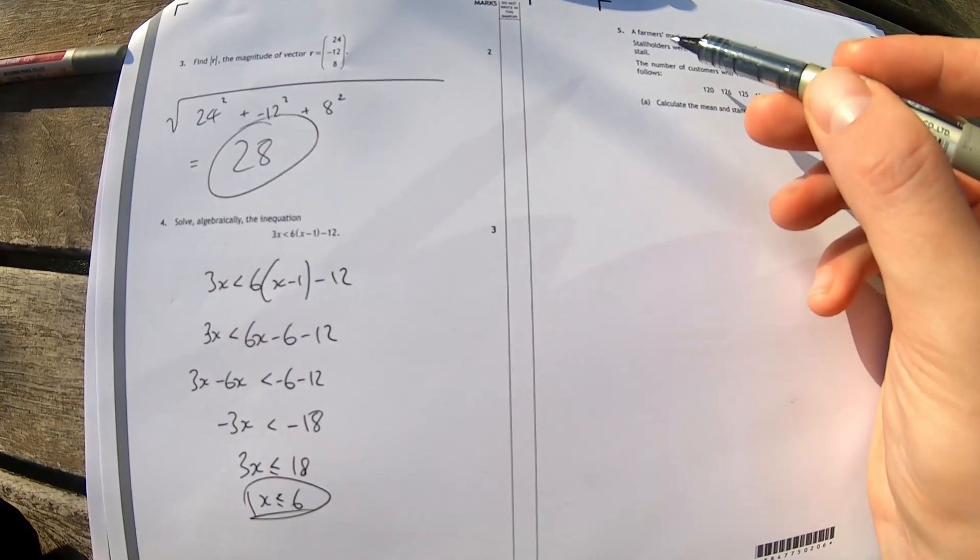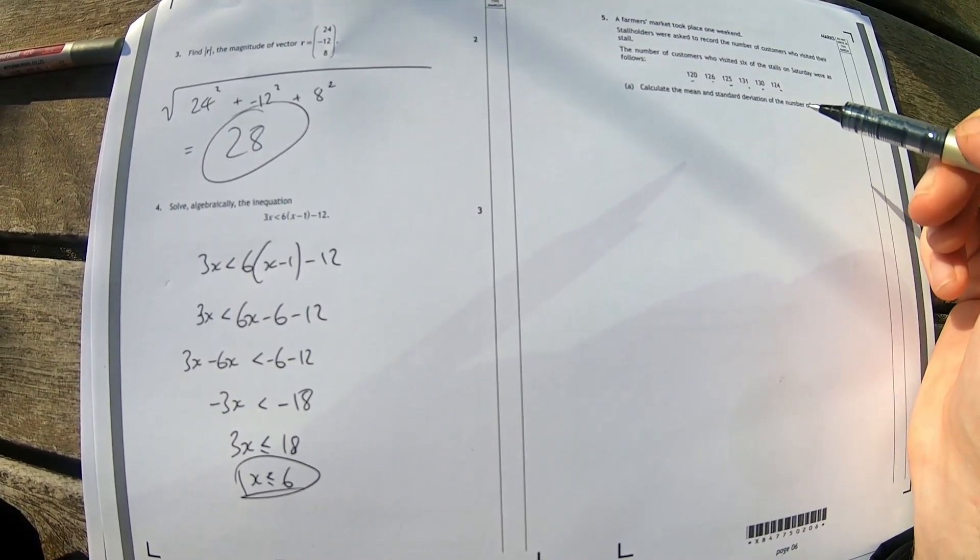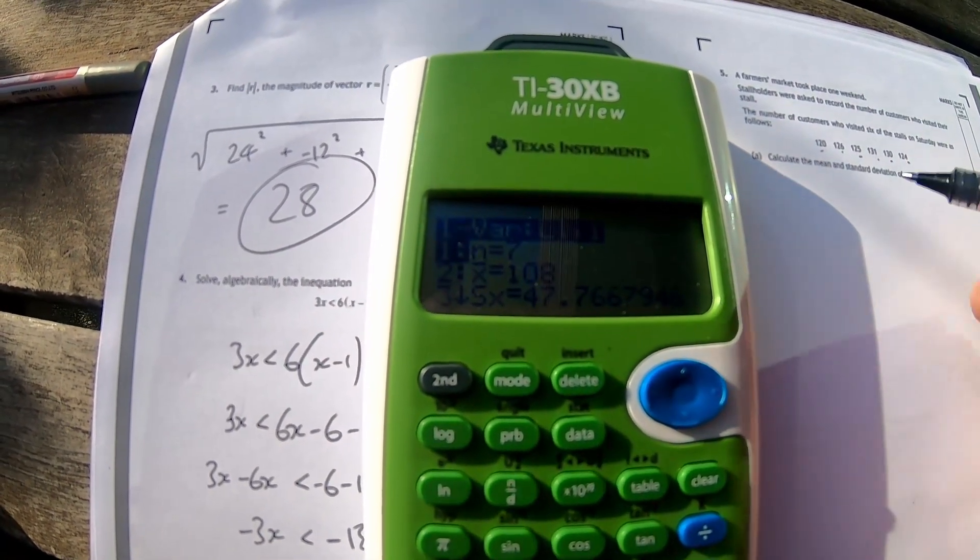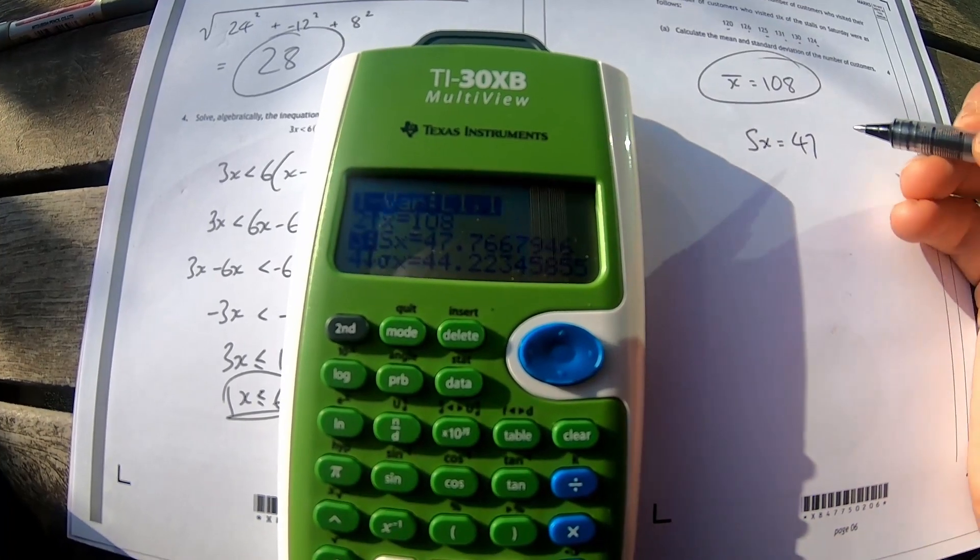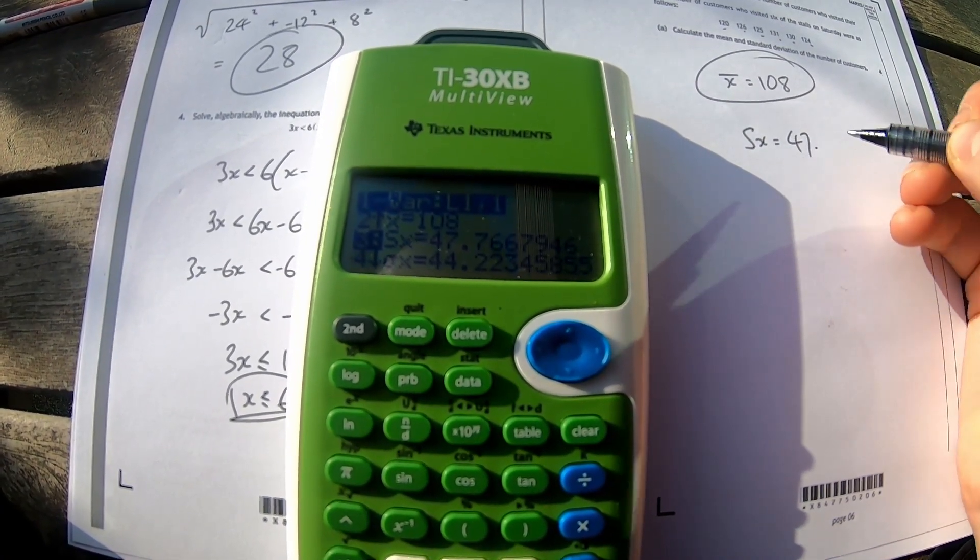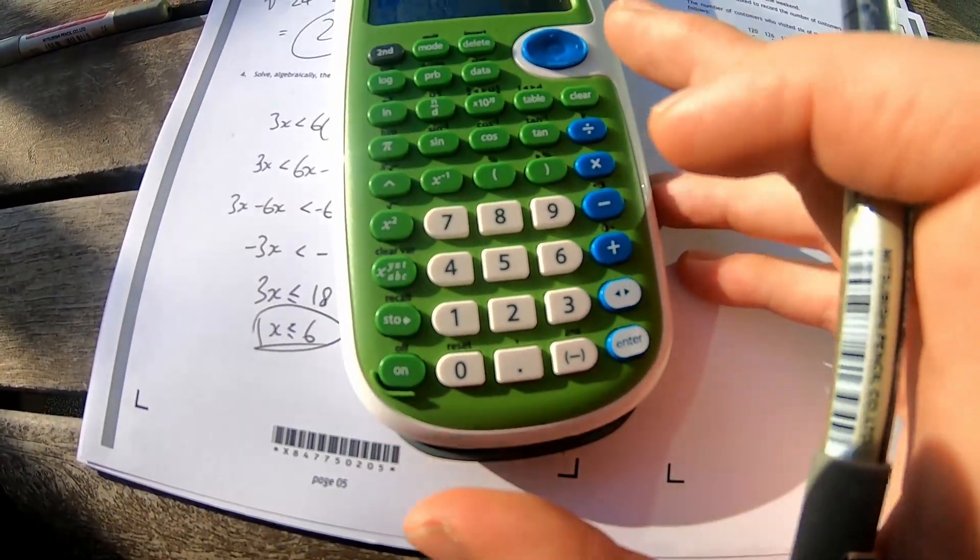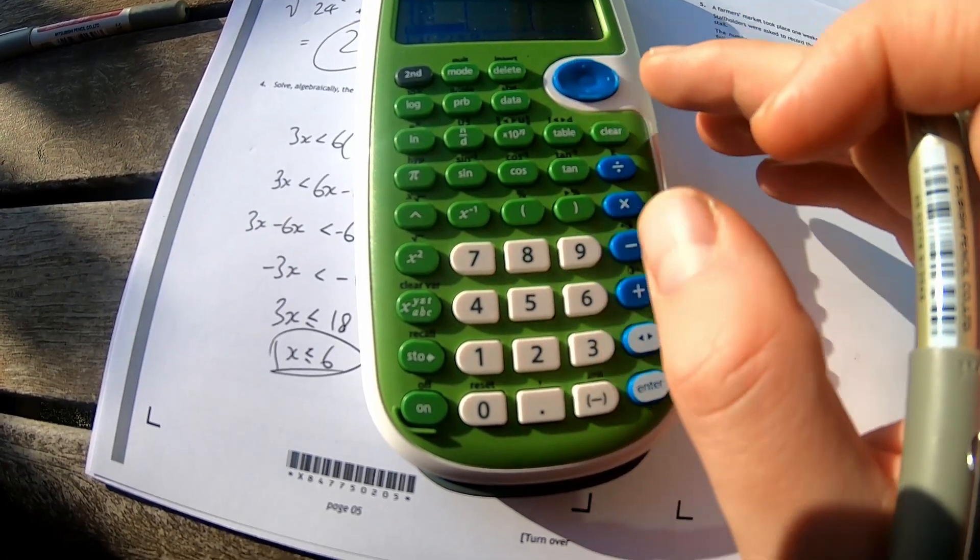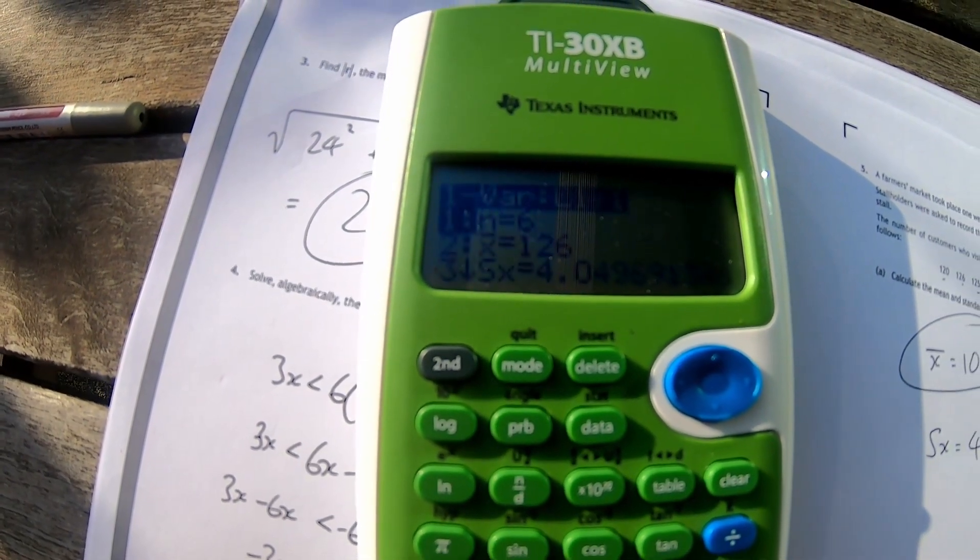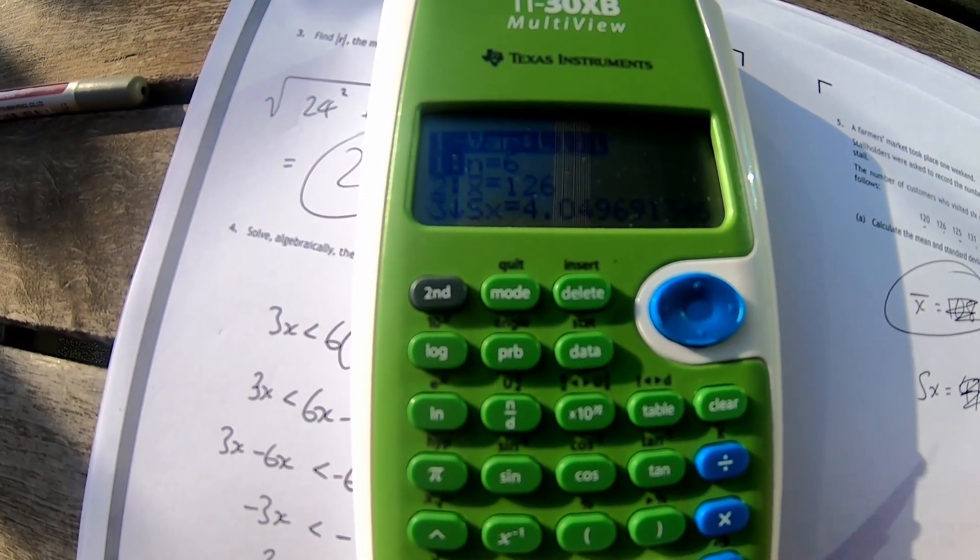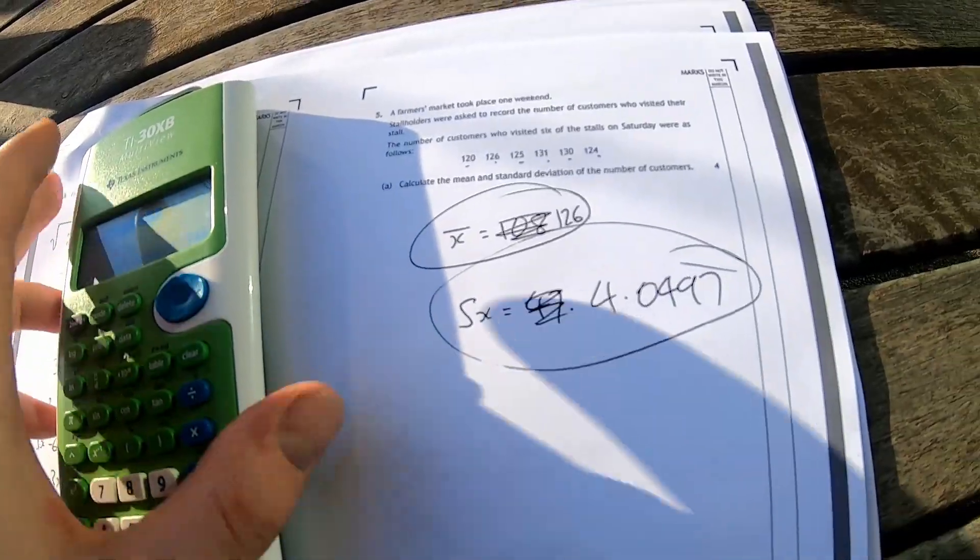The farmers market took place one weekend. Storeholders asked to recall the number of customers who visited their stall. Calculate the mean and standard deviation. I've got the formula in the formula book. I found a button that said calc and it's just giving me the answers. So the mean is 108 and the standard deviation is equal to 47. Seems very large to me. Seven data points. Are you sure? There's a zero hiding in there. Get rid of that zero. Press the calc button. There are my answers. Not 108. It's 126. And sx now is much better. 4.0497. That'll do. Next.